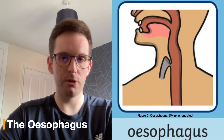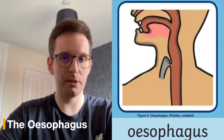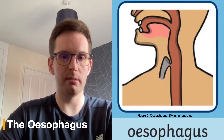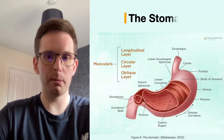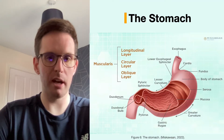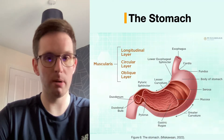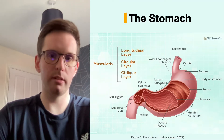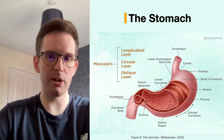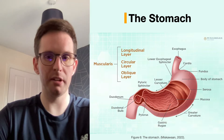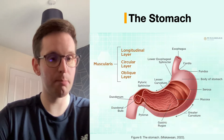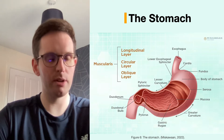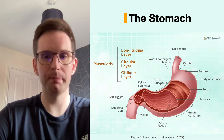The esophagus is a hollow tube that in most adults is around 25cm, and its function is to carry the bolus into the stomach. The stomach's function is to temporarily store food and further digest the bolus. The stomach is able to stretch to accommodate large amounts of food and is protected by a mucosal lining that acts as a protective barrier against its acidic environment.